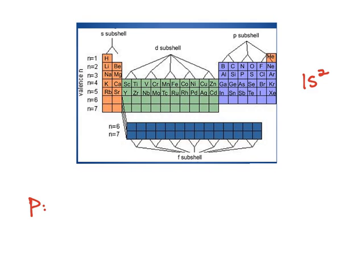When we're using the periodic table, we're going to get the number in front from the row that we're in, we're going to get the letter from what section we're in, and we're going to get the exponent from how many boxes we hit.